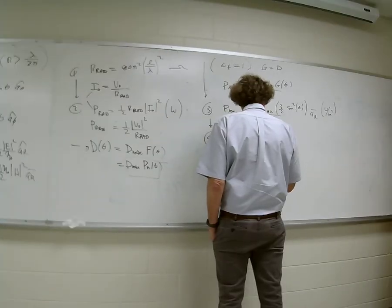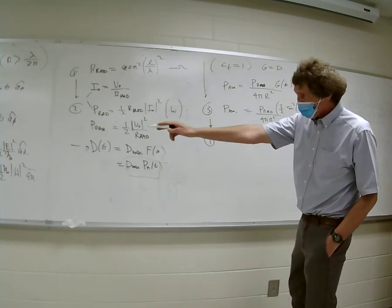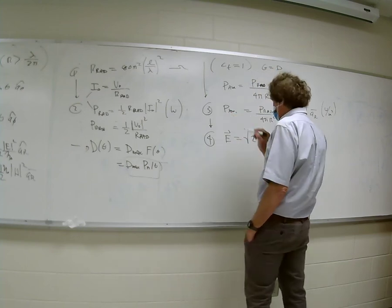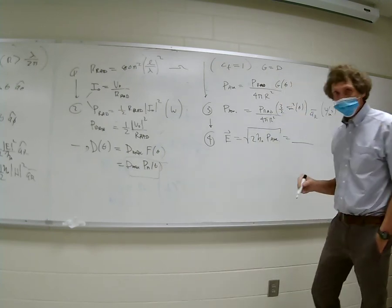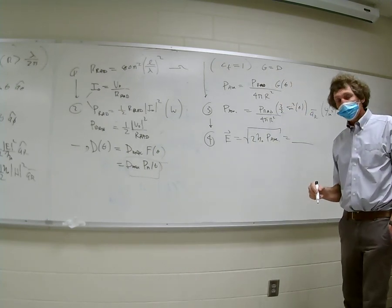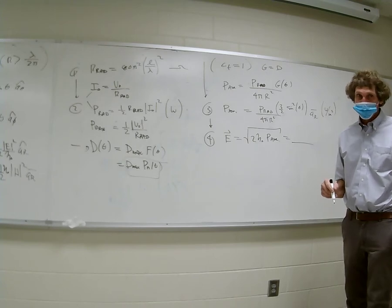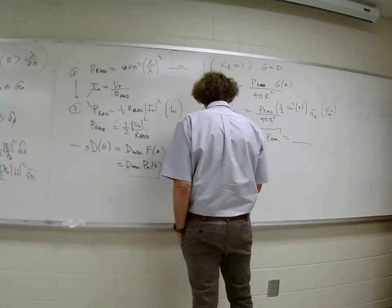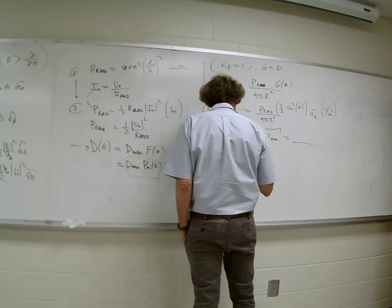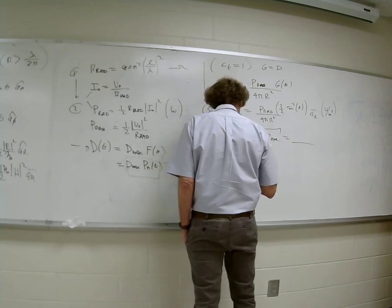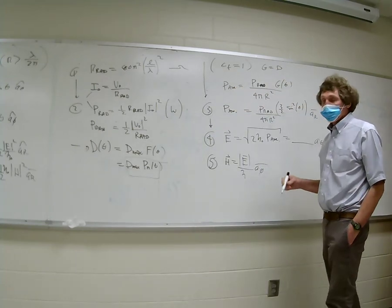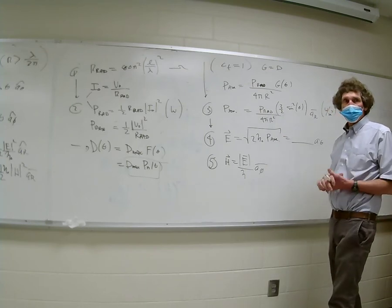The E field magnitude would be the square root of 2η₀ times the average power density. Now I have the E field magnitude. And if I wanted the H field, I just take the E magnitude divided by η and put it in the phi direction — those are the magnitudes you really worry about in the real world.